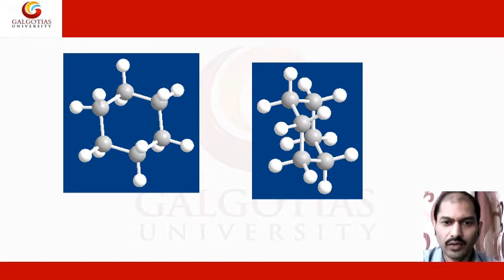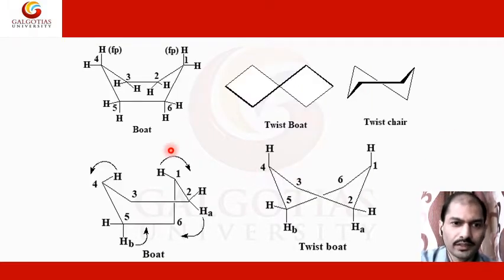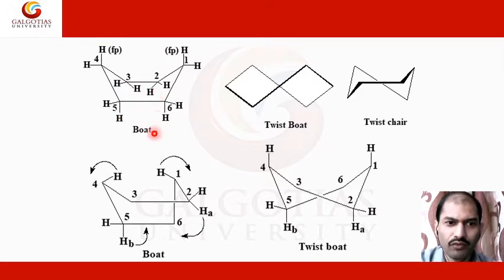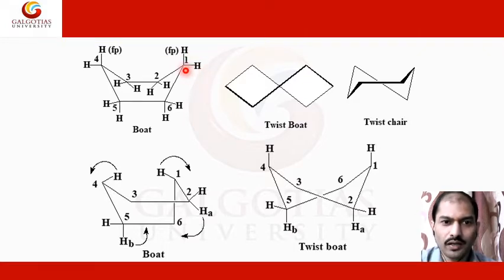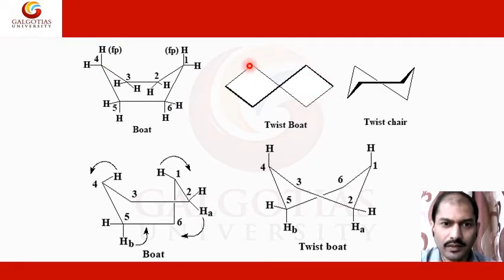In the case of the boat form, these forms can change to various other forms like twist boat form and twist chair form. Numbering starts from the substituted group — carbon one, two, three, four, five, and six. There are different twist forms where certain carbons are towards the viewer side (shown by hatched lines) and others are on the plane, giving different forms of cyclohexane like boat and twist form.